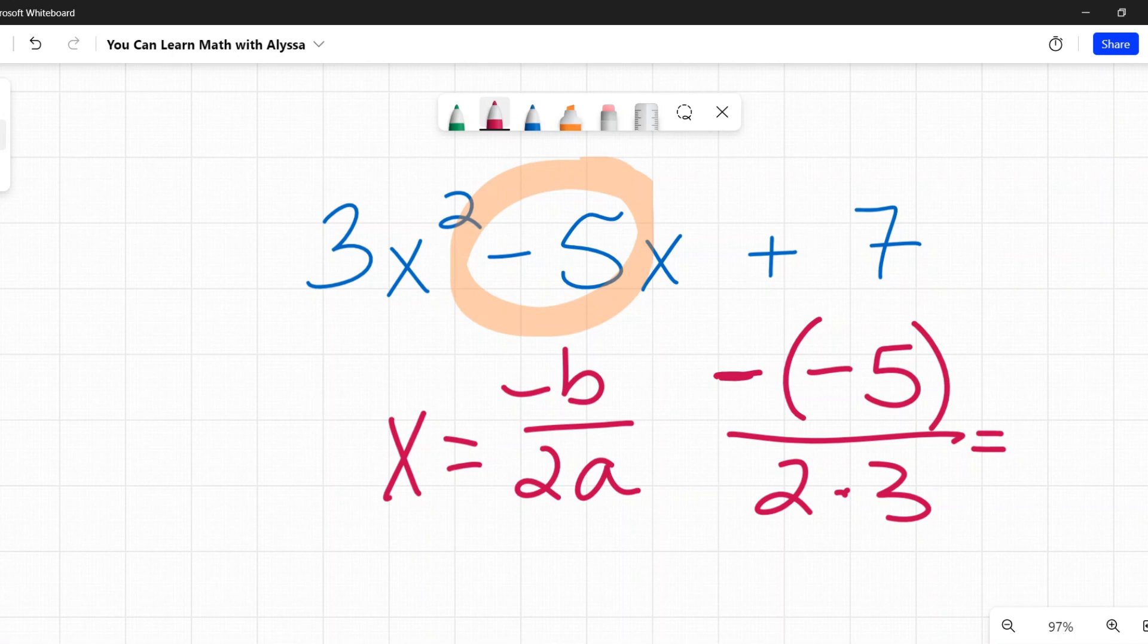So all that comes down on the bottom, 2 times A. My A is this 3, so it's 2 times 3. Negative negative 5 on top is 5, 2 times 3 is 6. So x equals 5 sixths would be my axis of symmetry here. Be so careful with that negative. It's more like the opposite of B.